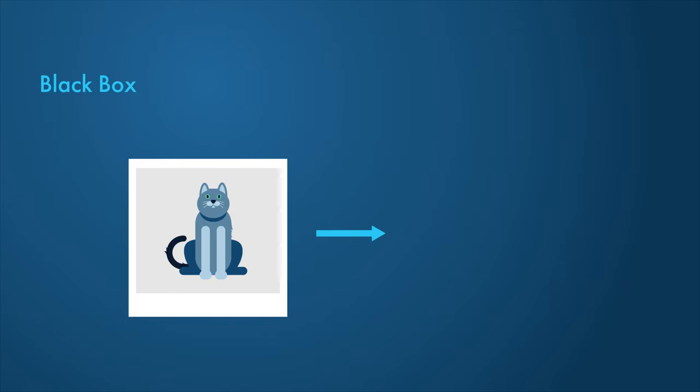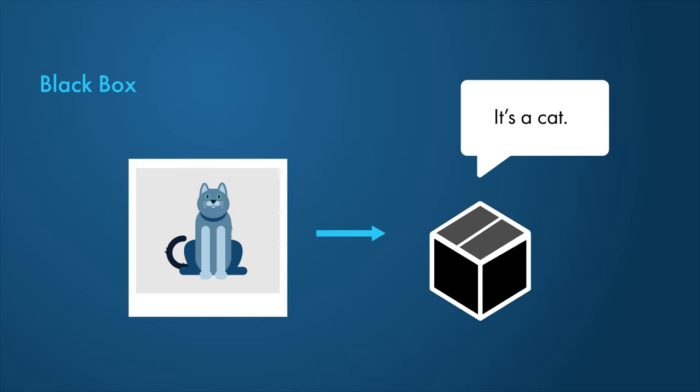An AI black box is an AI system with internal workings invisible to the user. The AI model makes decisions without providing any explanation. For example, an AI model might correctly classify an image but you don't know why.